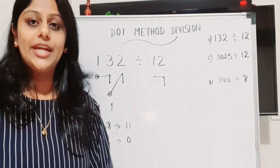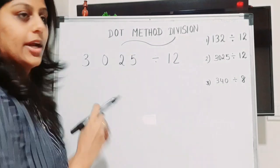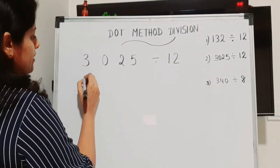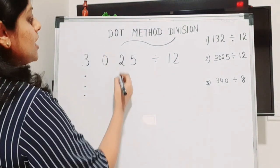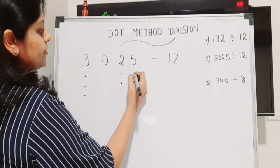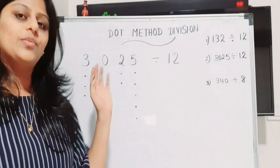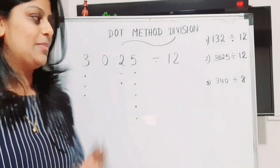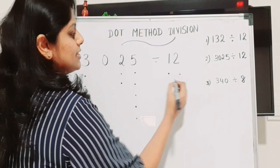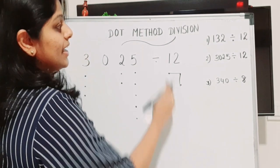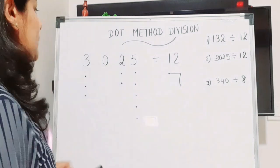The next question is 3025 divided by 12. The first step is the same — draw the dots. For 3 we draw three dots, for 0 we leave the column blank, for 2 we draw two dots, and for 5 we draw five dots. Using divisor 12, we group one dot from the first column and two dots from the second column.